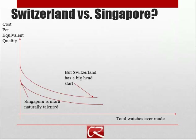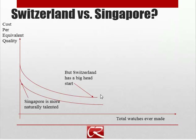One way of thinking about this learning by doing situation is to imagine watches. The cost to produce a watch of a given quality depends on the total number of watches ever made in a country, because that total establishes a skill set and historical tradition. It might be that Switzerland isn't really the most natural place to make watches — perhaps for any given level of experience, Switzerland has a higher cost per equivalent quality than Singapore. But if Switzerland has a big enough head start, then even though Singapore is the more efficient producer, Singapore as a latecomer will be unable to catch up with experienced Switzerland.